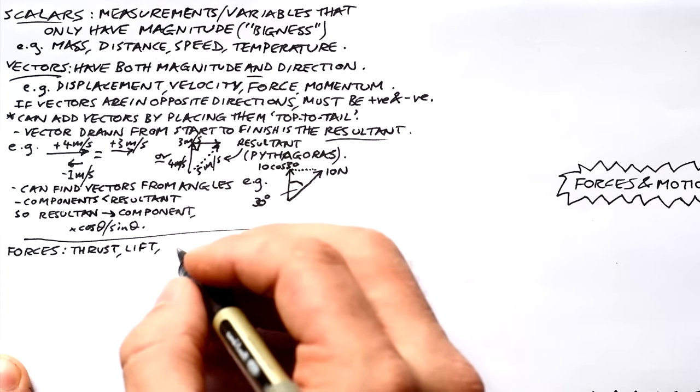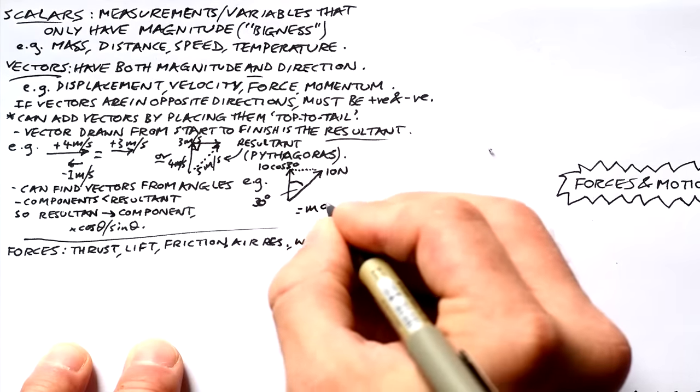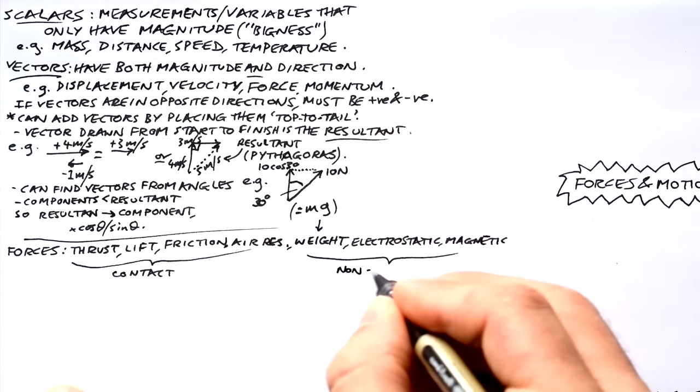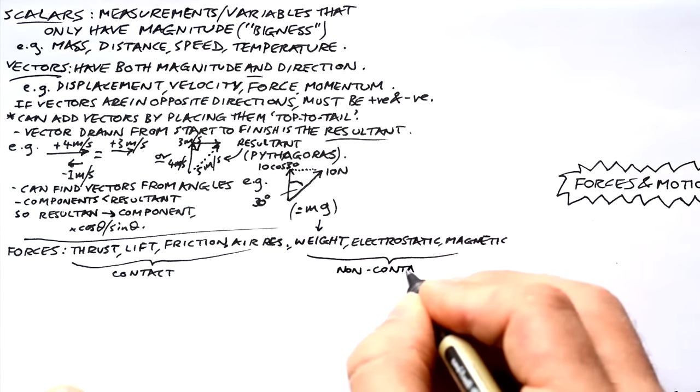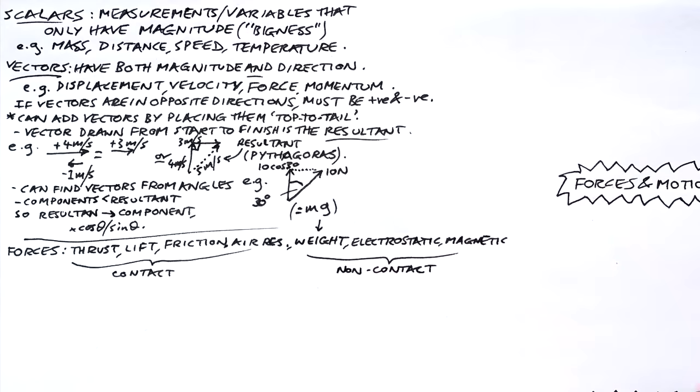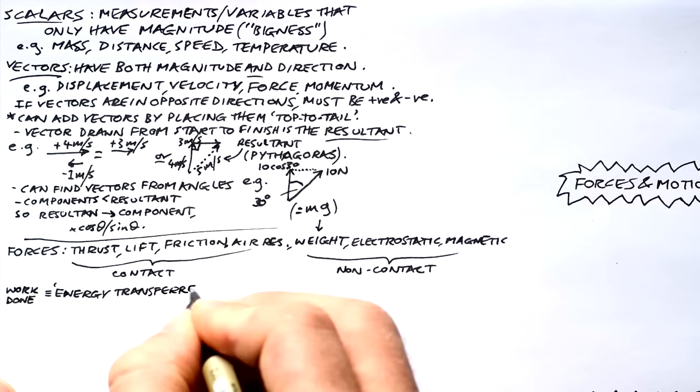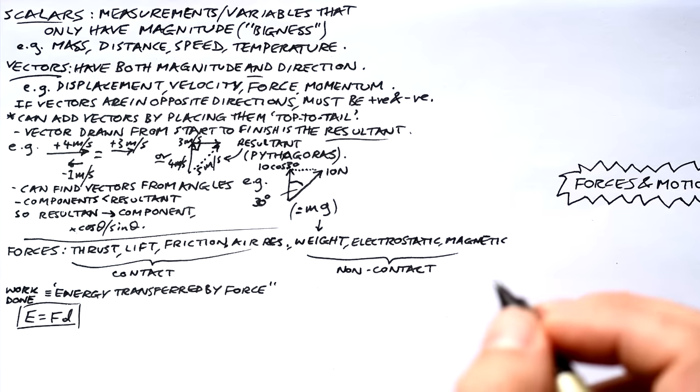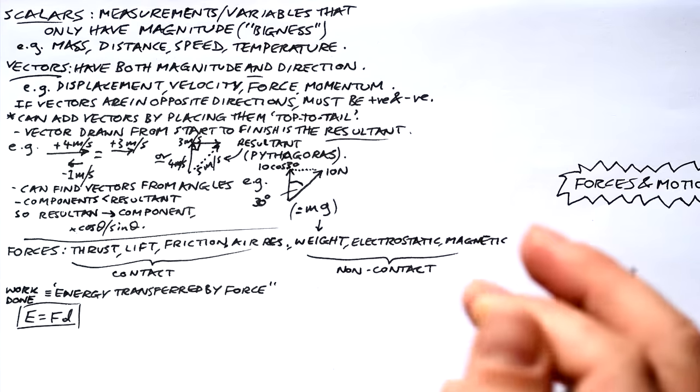We have all types of different forces. Thrust, lift, friction, air resistance, they're all contact forces. Then we have weight, electrostatic and magnetic forces that are non-contact. Weight incidentally is calculated by mass in kilograms times gravitational field strength g 9.81. Work done is just a posh name for energy transferred by a force and that's equal to force times distance moved. So E equals FD. I like E because it is just energy, joules after all.